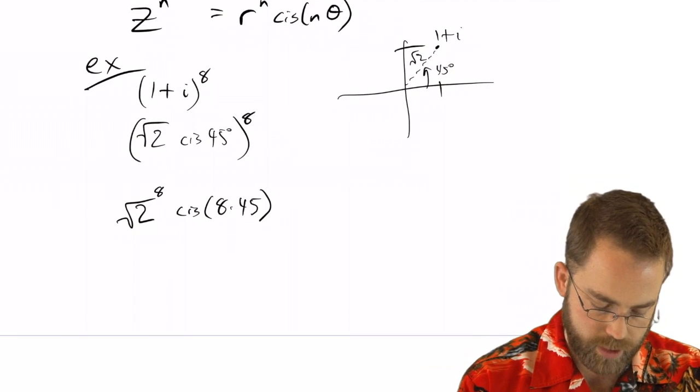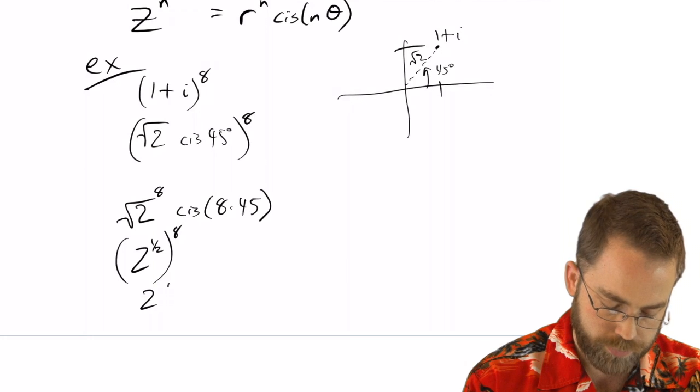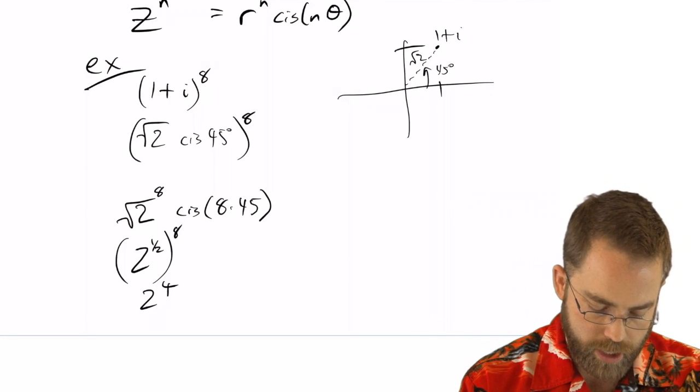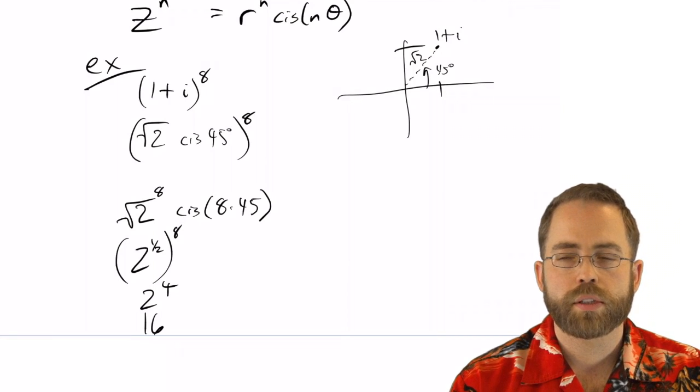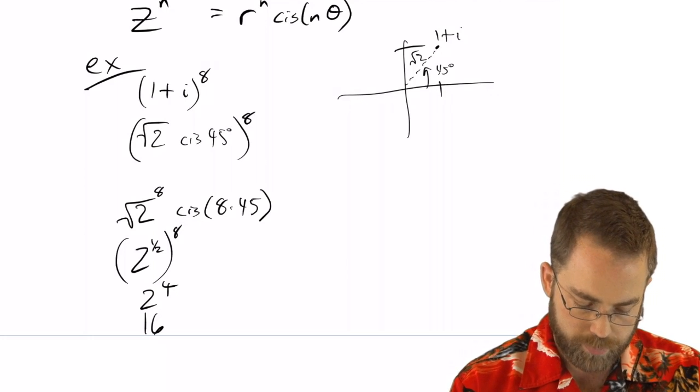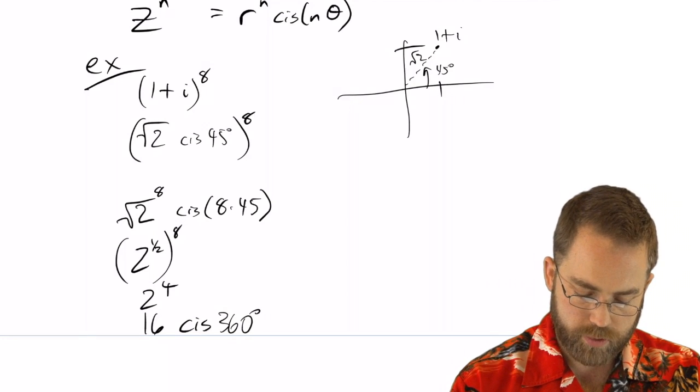So that's the same as 2 to the half to the 8th, which is 2 to the 4th: 2, 4, 8, 16. And then 4 times 45 - well, 2 times 45 is 90, 2 times that is 180, 2 times that is 360. So there's the answer.